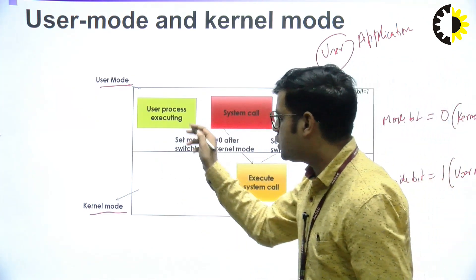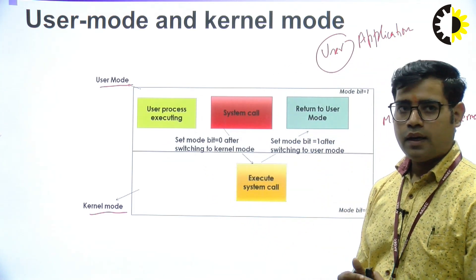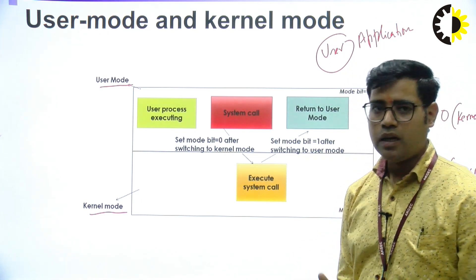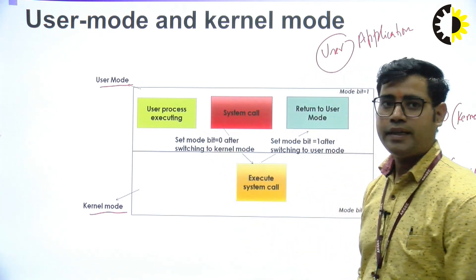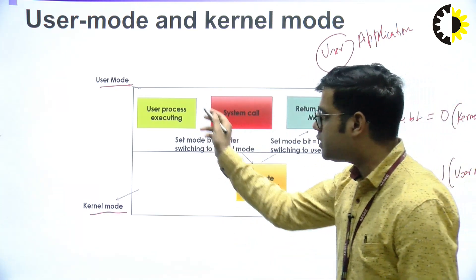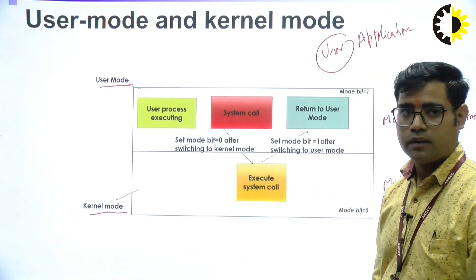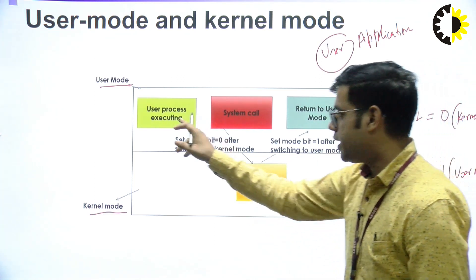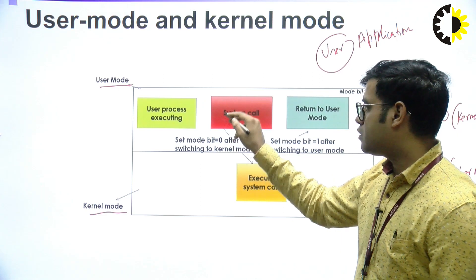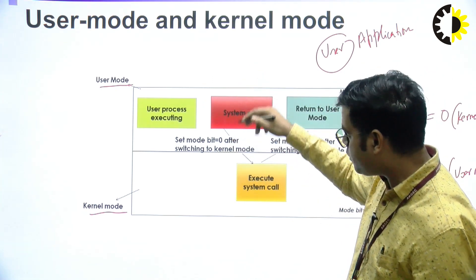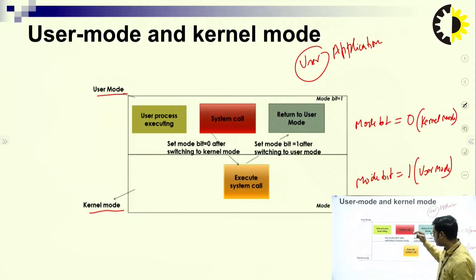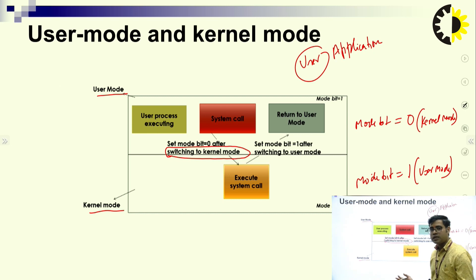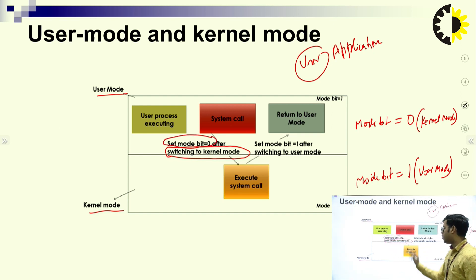Let us take an example. Suppose user processes are executing in user mode. When a user wants different functionality of the system, it generates a system call, because users do not directly interact with hardware — through the system call, we request to the kernel. The system call comes from user mode and is shifted from user mode to kernel mode, as shown — switching to kernel mode. Whenever the user request is made, it switches from user mode to kernel mode, and the mode bit is set to 0 after switching to kernel mode.